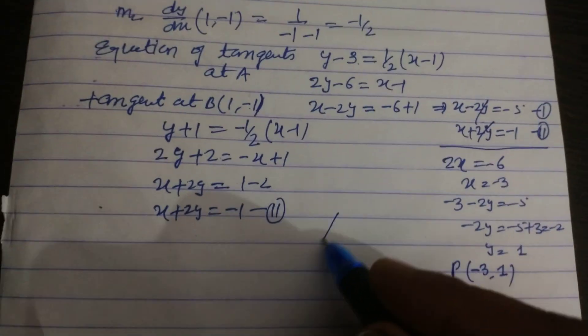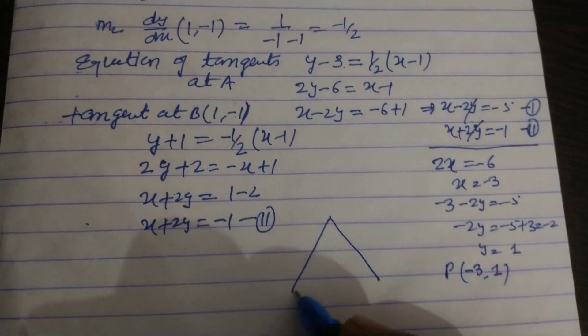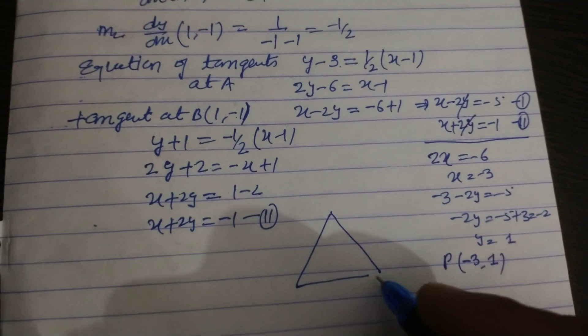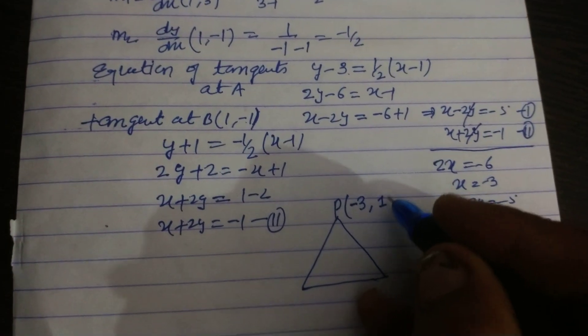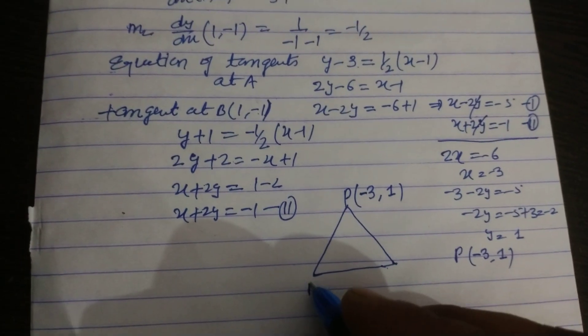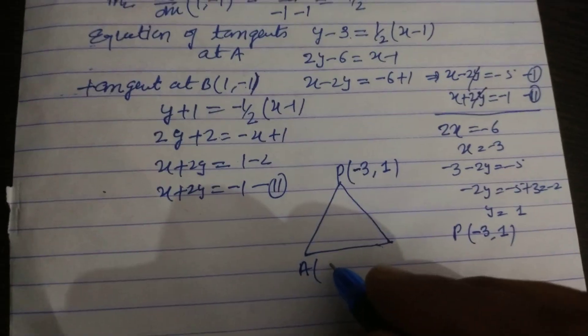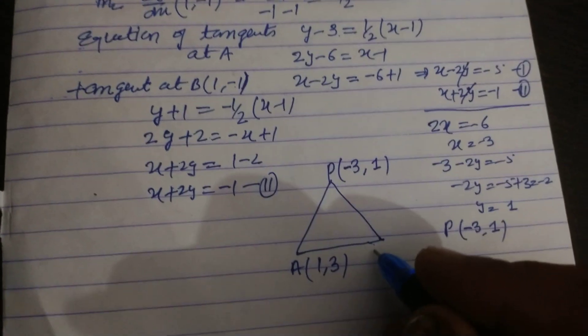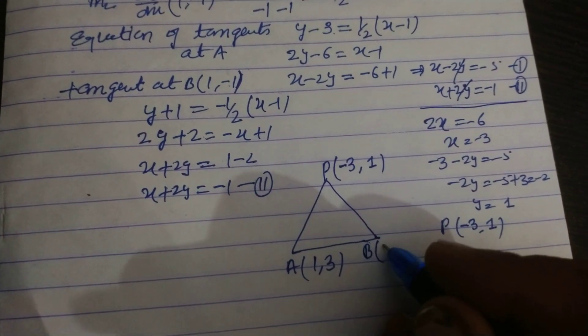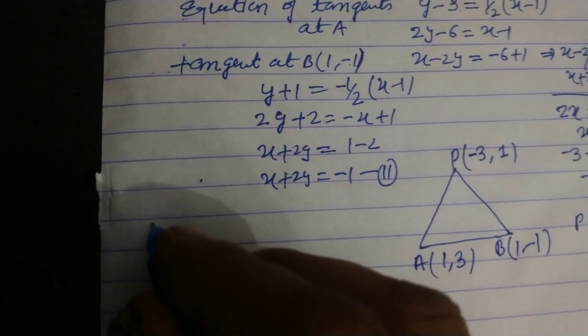Now make triangle, P is (-3, 1), A is (1, 3) and B is (1, -1). So area of this triangle.